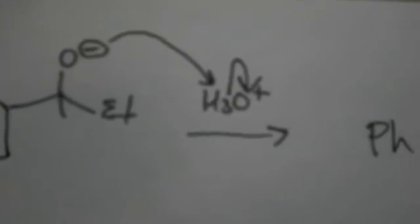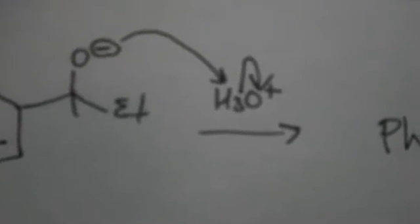So to neutralize the O, we take the hydroxide in the system and the oxygen attacks the hydrogen and cleaves it. That would lead us to an alcohol group that is attached to a benzene ring, a methyl group and an ethyl group, and that is a Grignard reaction.